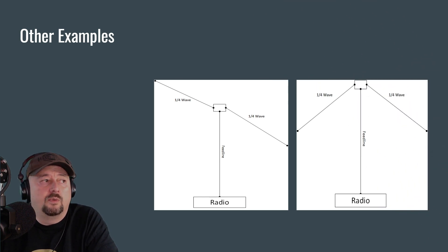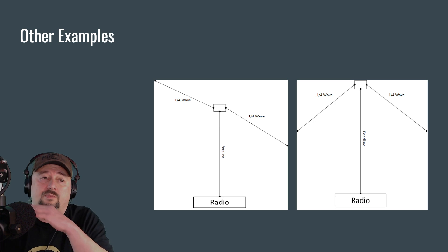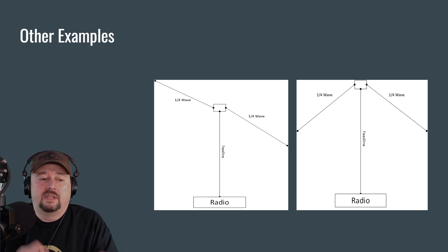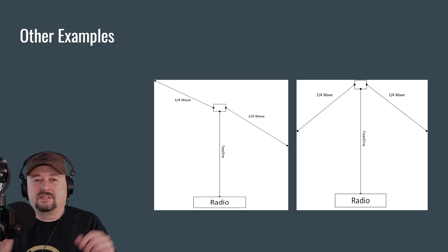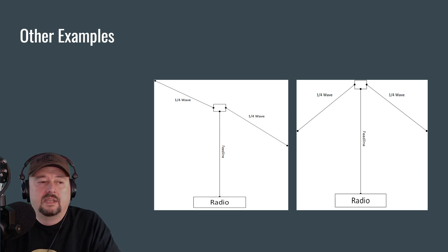Just some quick other examples. Now what we looked at in the previous slide is what is referred to as a flat top dipole, and that's when your antenna is perfectly horizontal across. And then you mount the ends of them on two masts or two trees or something along those lines and pull it taut.